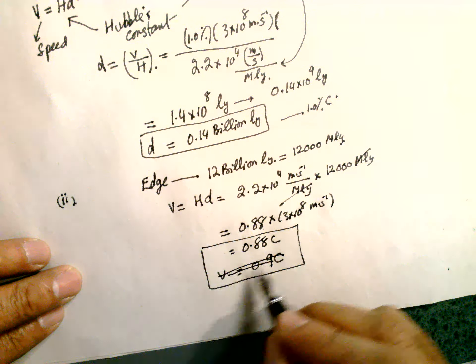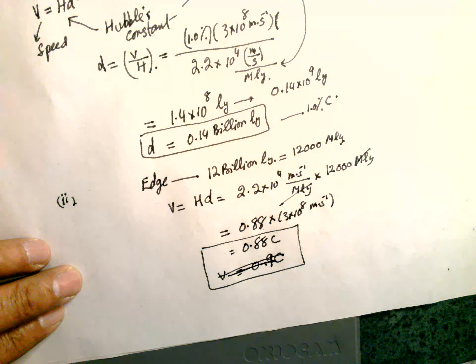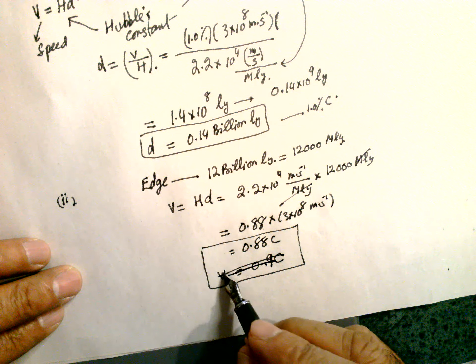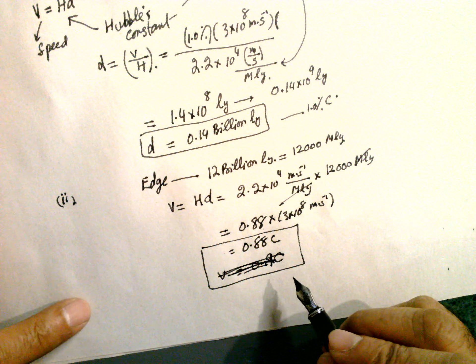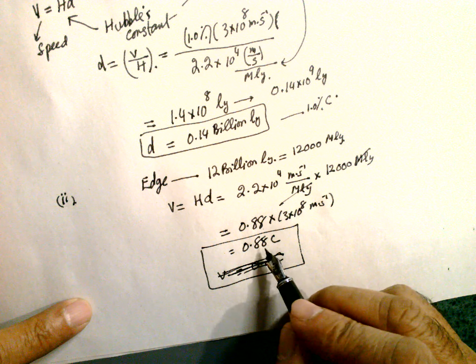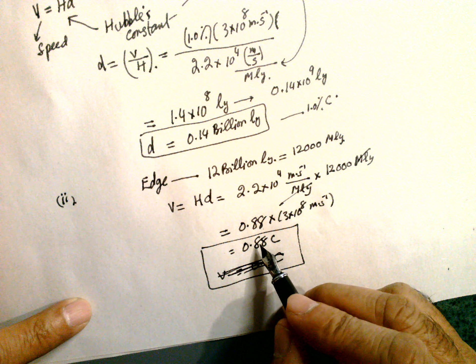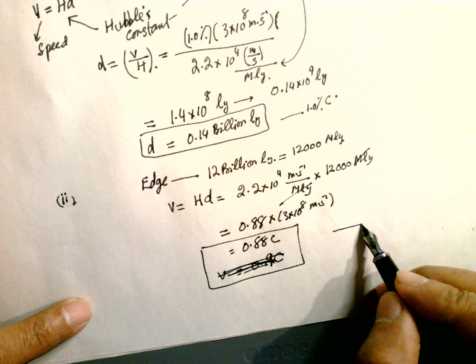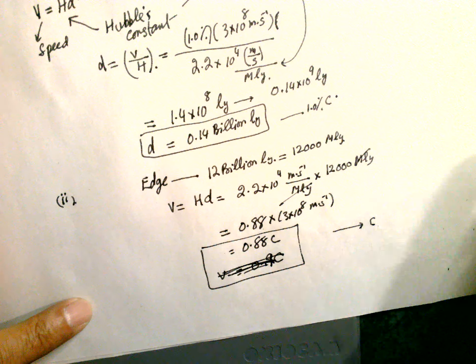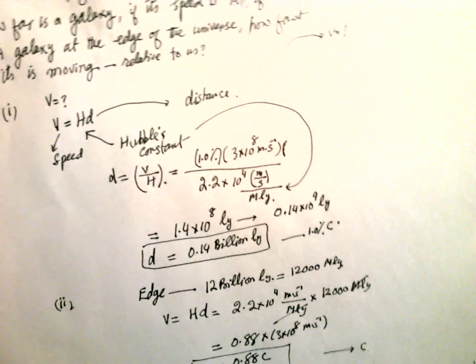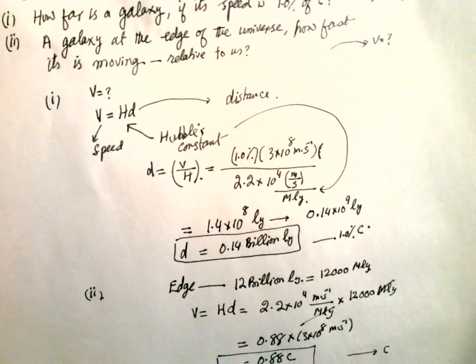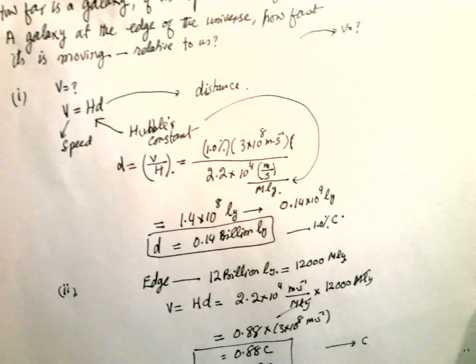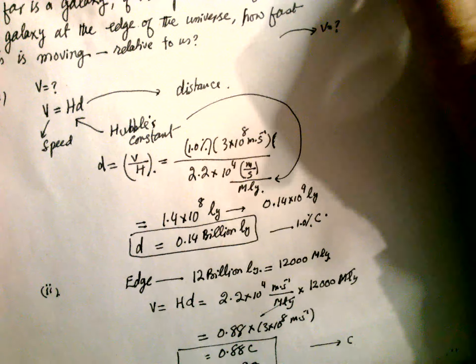But this situation is quite significant - this is nearly very close to C. The galaxy is moving at 0.88C. So this is the answer to the question: how galaxies are moving away from us very fast.